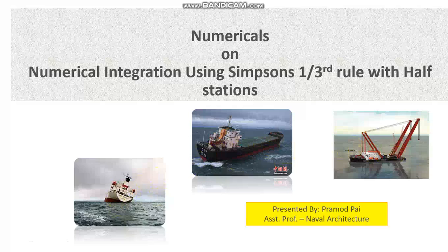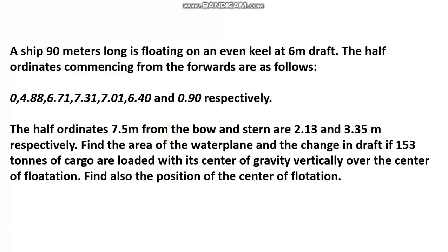Simpson's one-third rule is used when we have an odd number of data points — when an odd number of stations are given in a question. A student needs to clearly know which type of rule to apply in which question, because that will not usually be mentioned in the question — you have to decide.